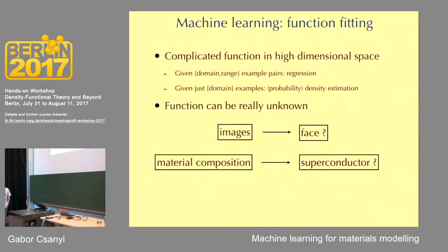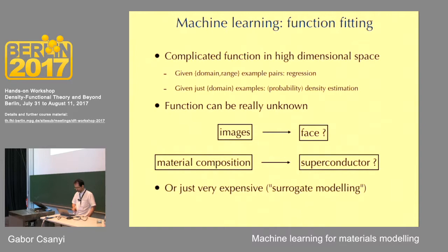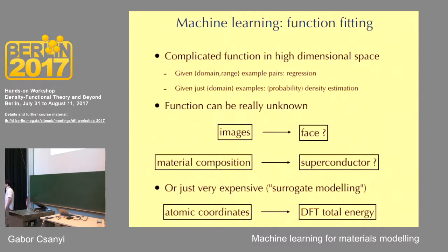Here's another example closer to materials science. I give you a material composition and ask whether the resulting material is a superconductor. There's another way of using machine learning — and in fact that is the topic of today's talk — where we do know the function we're trying to approximate; it's just very, very expensive. Hence my opening remarks about electronic structure calculations being much more expensive than we would like. In that case, there's another word for what we're trying to do: it's called surrogate modeling.